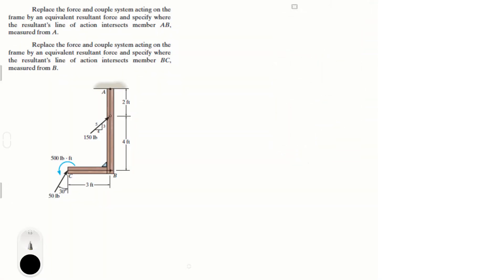Alright guys, let's do these two problems as I said. Replace the force and couple system acting on the frame by an equivalent resultant force and specify where the resultant line of action intersects the member AB and then the member BC.